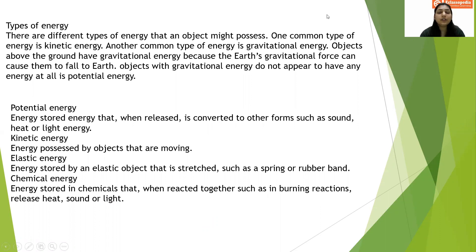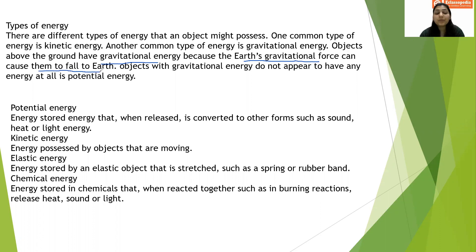There are different types of energy. An object can possess different kinds of energy. Most commonly, we use kinetic energy. Then we have gravitational energy — objects above ground have gravitational energy because earth's gravitational force can cause them to fall to the earth. Objects with gravitational energy do not appear to have energy at all; this is what we call potential energy. Potential energy is energy stored that, when released, is converted to other forms such as sound, heat, or light.